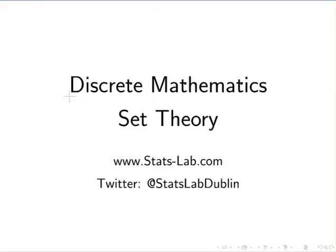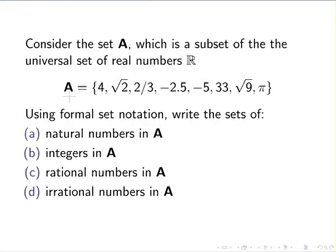In this presentation, we are going to look at some examples from set theory. Consider the set A, which is a subset of the universal set of real numbers R. Here are the components: 4, square root of 2, 2 thirds, minus 2.5, minus 5, 33, the square root of 9, and pi.